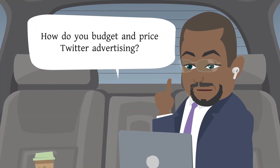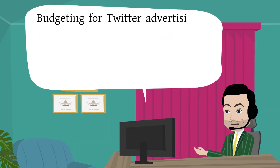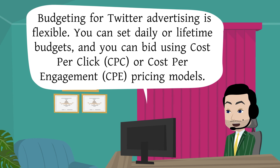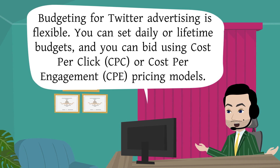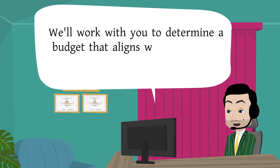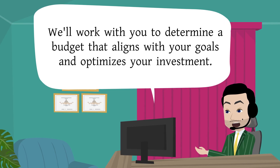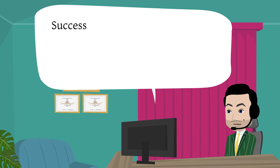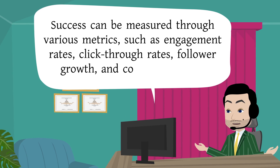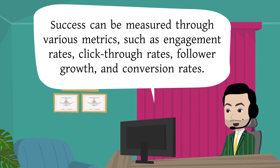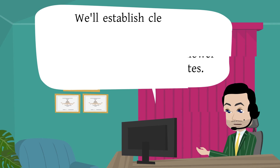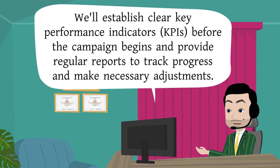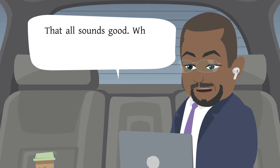How do you budget and price Twitter advertising? Budgeting for Twitter advertising is flexible. You can set daily or lifetime budgets and bid using cost-per-click (CPC) or cost-per-engagement (CPE) pricing models. We'll work with you to determine a budget that aligns with your goals. Success can be measured through metrics such as engagement rates, click-through rates, follower growth, and conversion rates. We'll establish clear KPIs before the campaign begins and provide regular reports to track progress and make necessary adjustments.